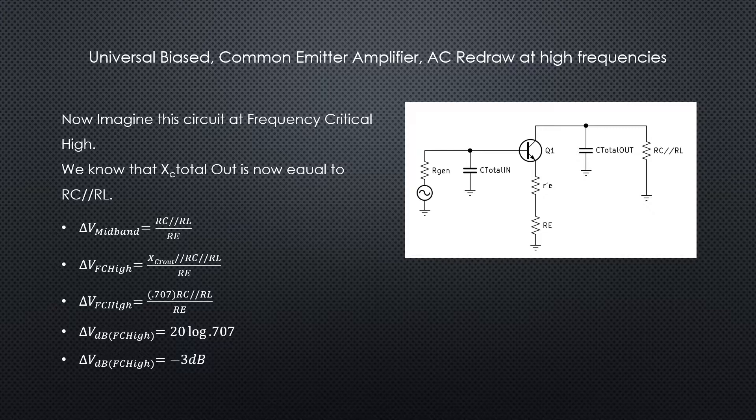So we can see that our gain, our numerator, has gone down by a factor of 0.707 and our gain is going to go down by a factor of 0.707. If we run that into the dB formula, we can see that 20 log of 0.707 is equal to minus three dB. We know that's where we should be at the cutoff frequency.